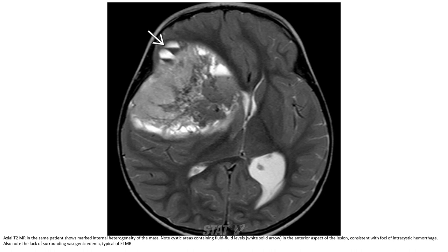T2 MRI in the same patient shows heterogeneous signal of the mass, with cystic areas containing fluid. There is signal in the anterior aspect of the lesion consistent with focal intracystic hemorrhage. Also note the lack of surrounding vasogenic edema, typical of ETMR.